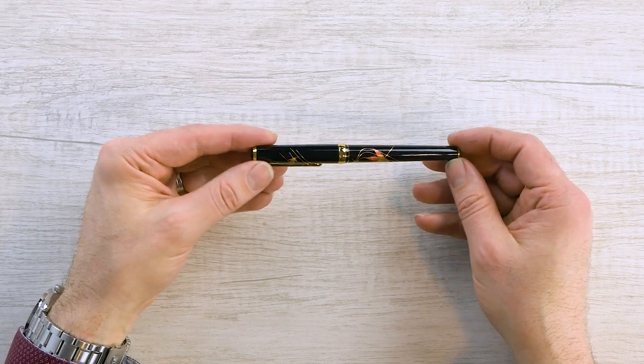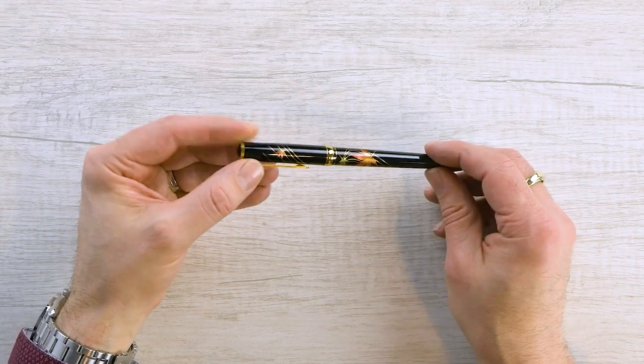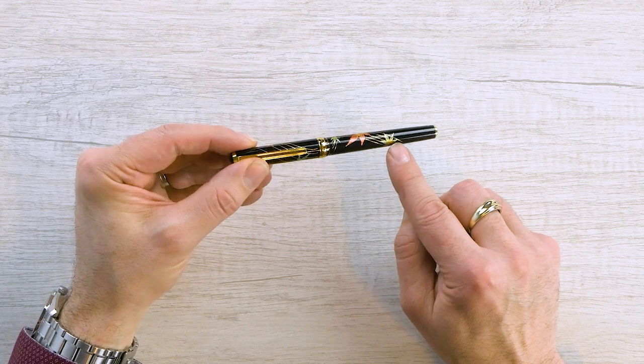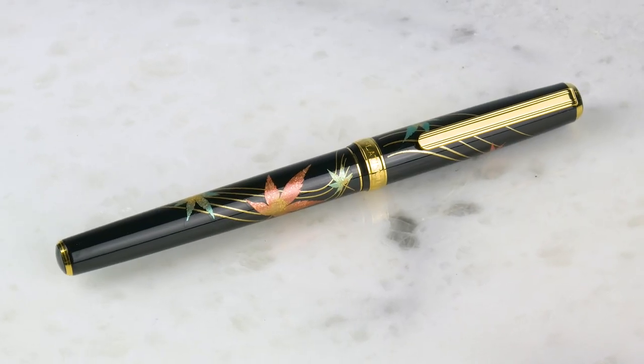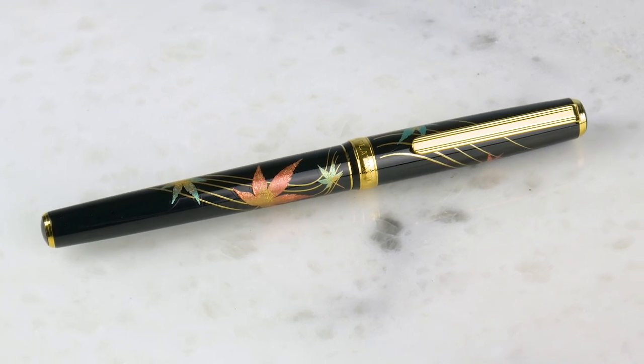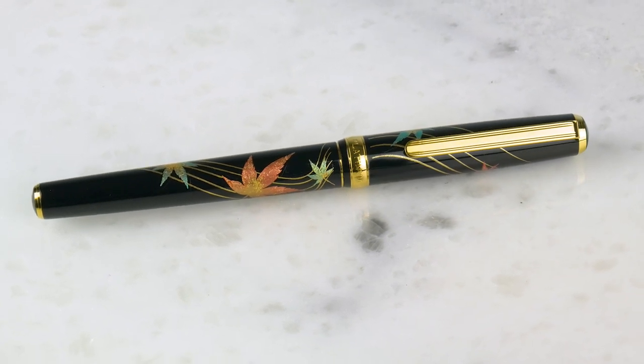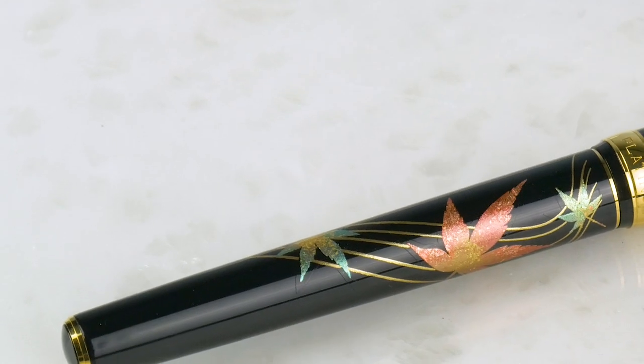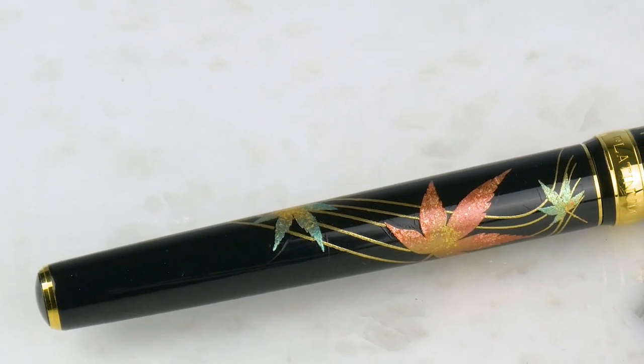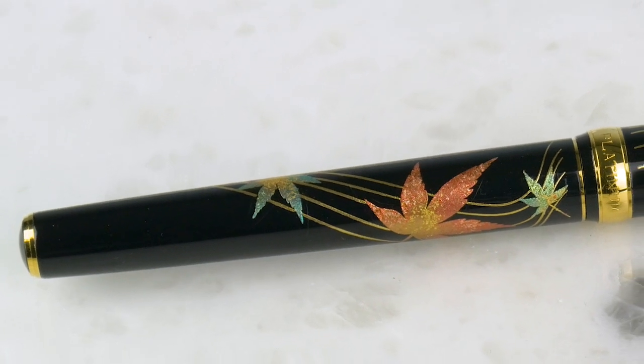This is the autumn leaves. And you see we've got the nice leaves here in different colors. We've got a little bit of green there. And this is applied with Kanazawa leaf, which is a very thin gold leaf that is applied to the pen. And then these pens do have a thin coat of Arushi Lacquer on here to protect the Screen Maki-A.